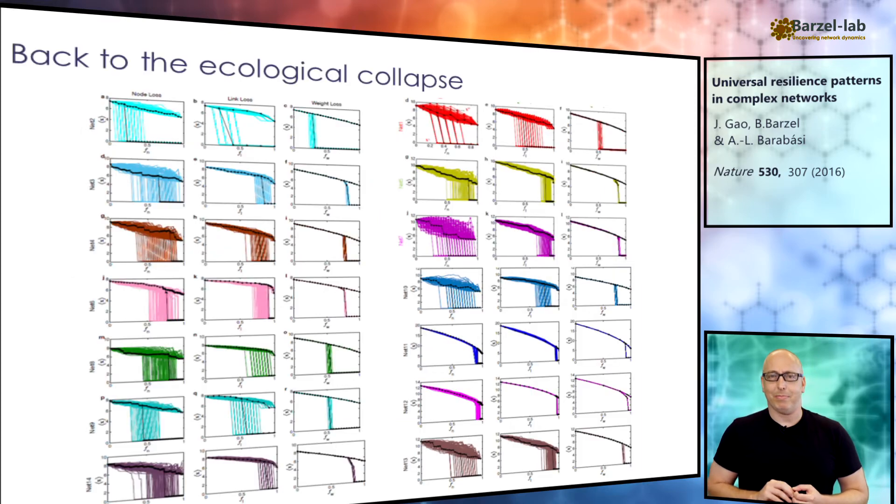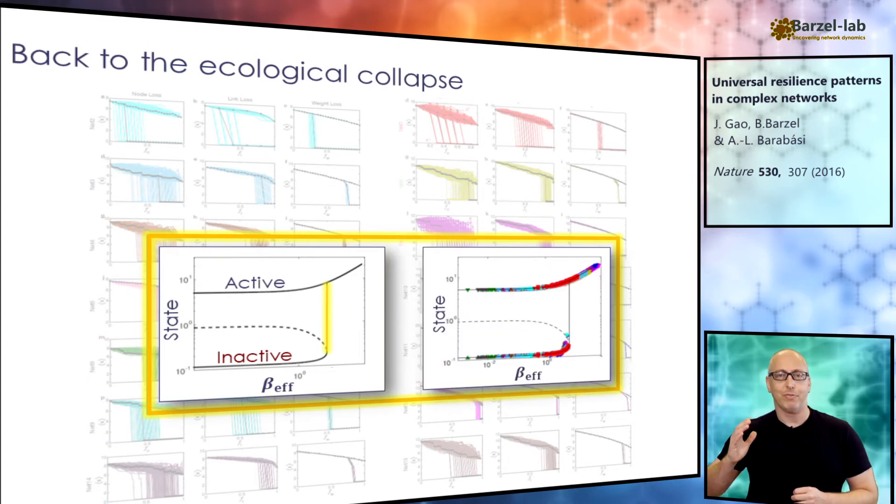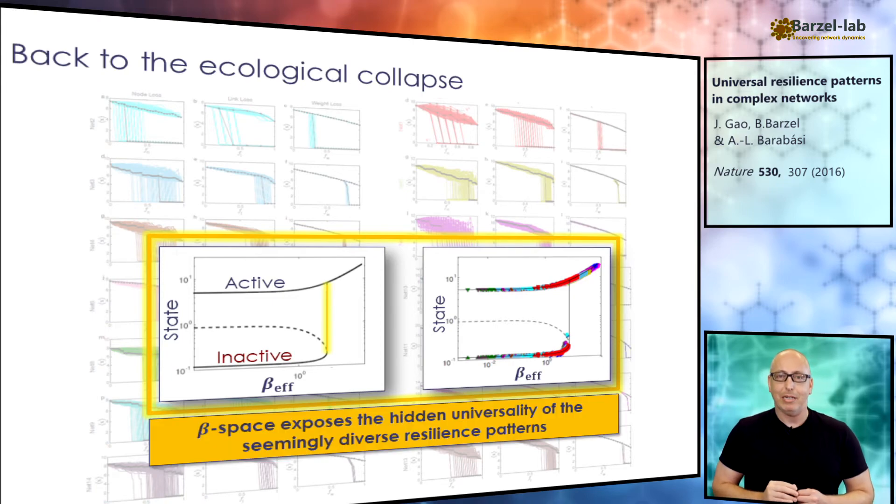Let's go back to our ecosystem. Its one-dimensional resilience function has a single critical transition. What our theory predicts is that all the mess we have observed earlier is simply because we were looking at the wrong parameter. If we map all our perturbations to beta space, they all collapse into one predictable tipping point. So behind that diversity, the zoo of resilience patterns that we observed earlier, we clearly see that there is a hidden universality.